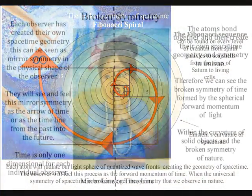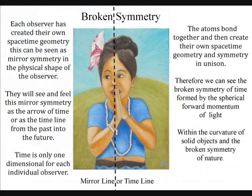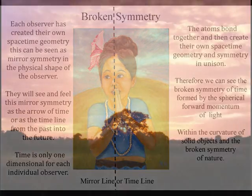This process is formed by the momentum of light forming the arrow of time and the geometry of spacetime.